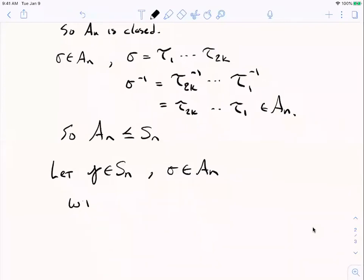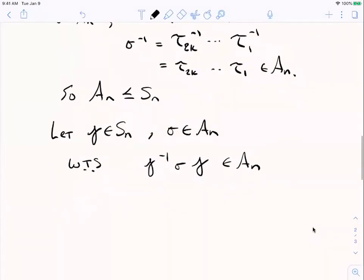And to show it's normal, let me remind you what I want to do. I want to show that gamma inverse sigma gamma belongs to An. So I want to show that gamma inverse sigma gamma has an even number of transpositions. Well, we have to do two cases. Case one is that gamma is even. Okay?